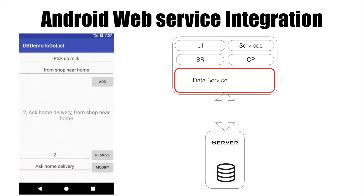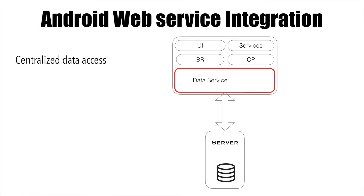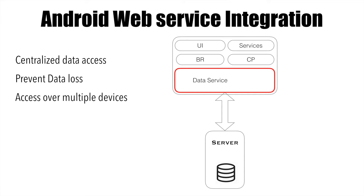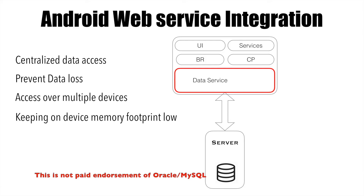You might be wondering what are the scenarios in which we would have web service integration in a mobile app. Well, whenever there is a need for centralized data access, you want to prevent data loss — because if you delete the app and the data is only on the app, that data is lost. It is better that it is kept at a remote server. Also, if you own multiple devices and want to access your data from multiple devices, it makes sense to keep data on a centralized server. Keeping on-device memory footprint low is another requirement, and it is better to keep data in enterprise-level databases like Oracle or MySQL.